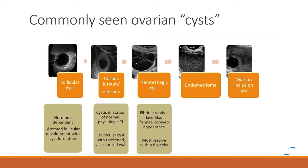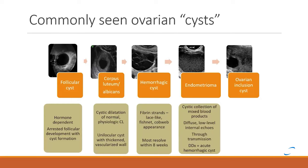The hemorrhagic cyst is usually quite characteristic on ultrasound. It tends to have the appearance of a cobweb or lace-like configuration with lots of fibrin strands, and there's an angular clot that you can see retracting, outlined with very angular and straight margins. That's what a hemorrhagic cyst looks like, and most of those resolve within eight weeks.